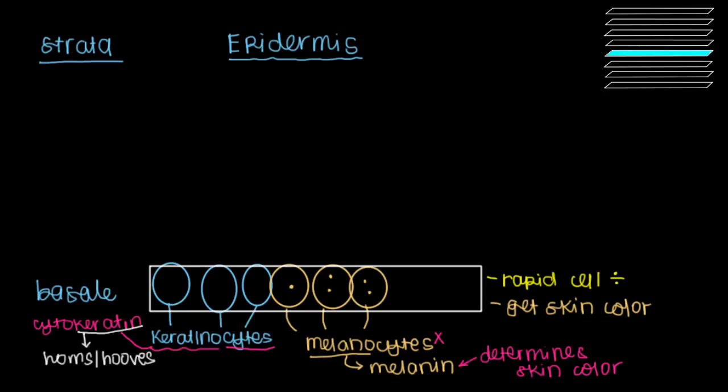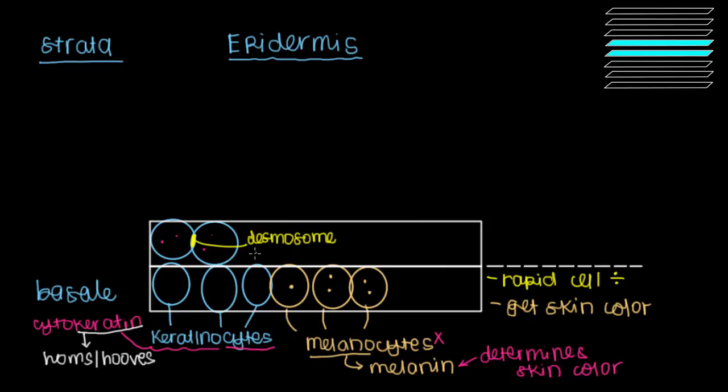So as we move up to our next layer over here, we see that our keratinocytes make it up here too. And we might start to notice some of this cytokeratin that's being produced here a little bit. And one of the unique features about this next layer is that we have this little connection that's starting to be generated in between our keratinocytes. This guy is called a desmosome.